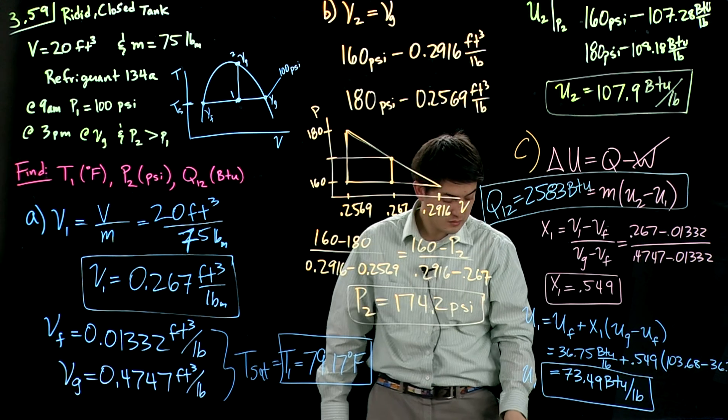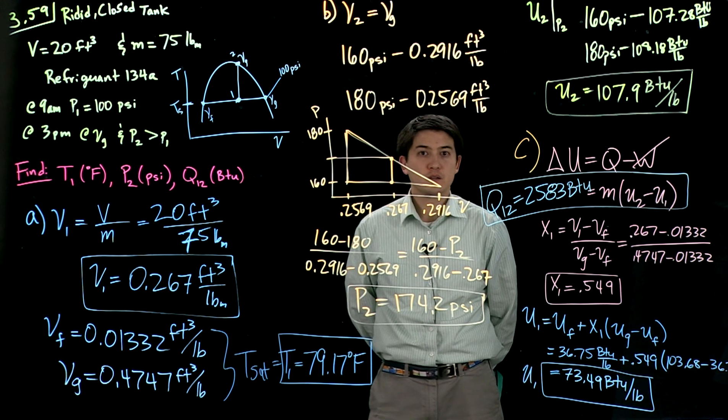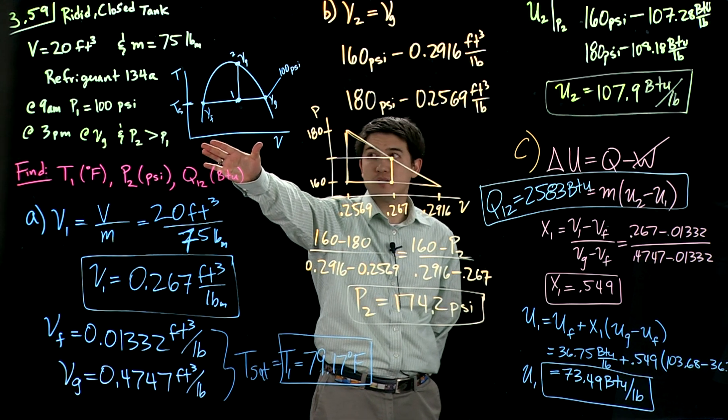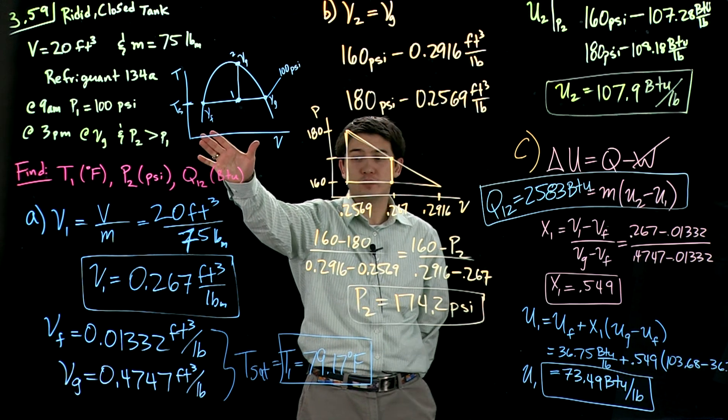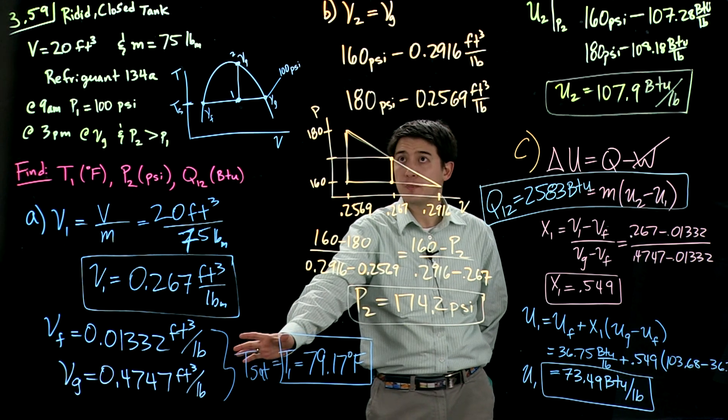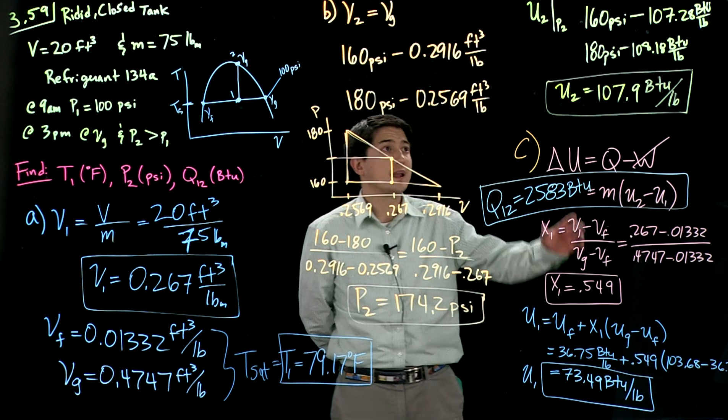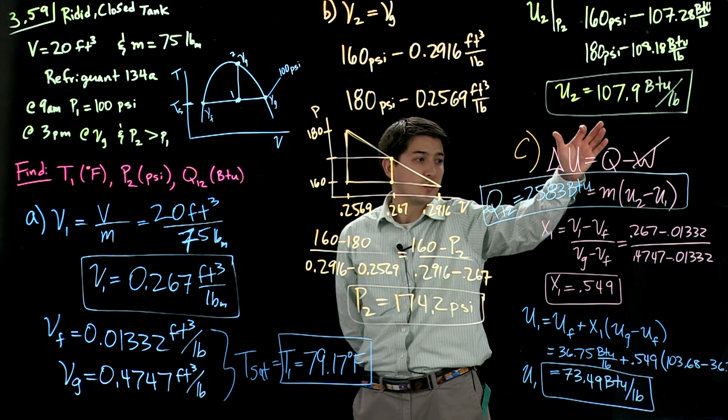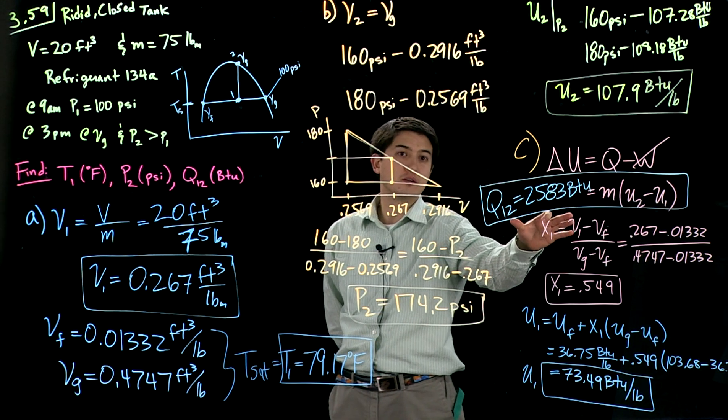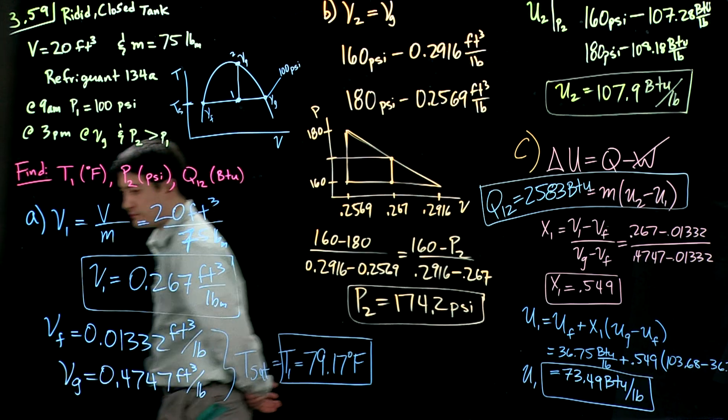And that wraps up problem 59. Remember, you got this box that starts in the sunshine. It's closed, sealed, rigid. We heat it up. Specific volume doesn't change. We find the initial temperature. We go through. We find the final pressure. We then find the final specific energy. We use that along with the initial specific energy to find the overall heat transfer into the box from 9 a.m. to 3 p.m. Thank you.